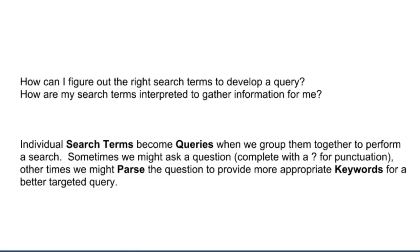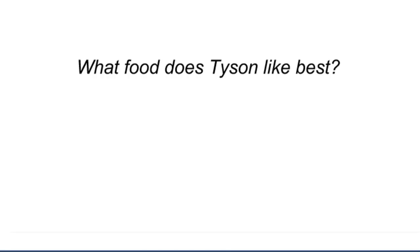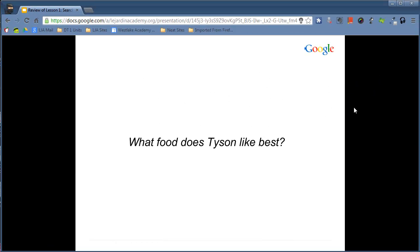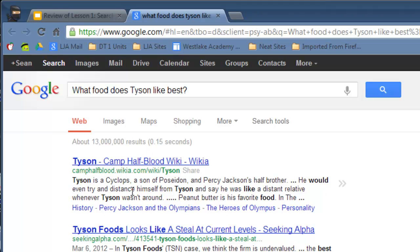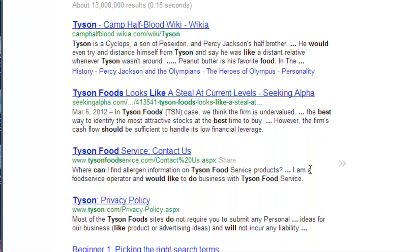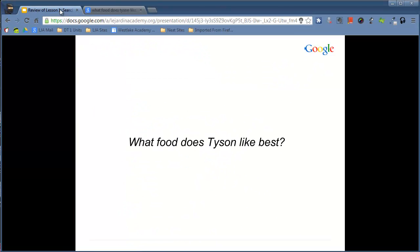If you can remember from our last class, we actually had a query that we used. What food does Tyson like best? We're really trying to find out information about Tyson, a character from a Percy Jackson book. But when we typed this into Google, we got one of the results we wanted, but the rest of the results had to do with Tyson chicken. Absolutely nothing of what we really wanted. The reason was this wasn't actually the best targeted search. It wasn't the best possible query we could have done.